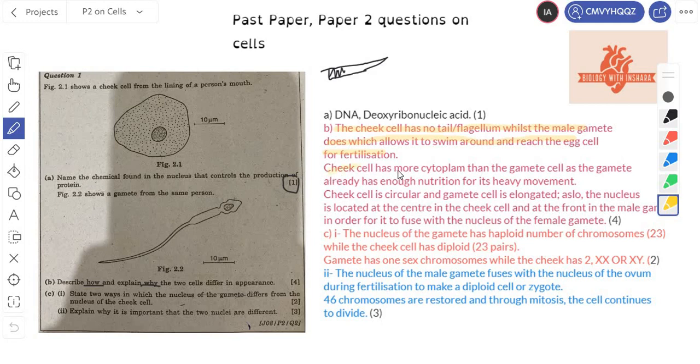Now this comes under inheritance and genetics and I'll be making videos on this as well very soon because I had a request from someone to make a video on inheritance. And yes, I do remember your request and those videos will be uploaded very, very soon. The cheek cell has more cytoplasm. You can tell like this region here, if I shade this, you see this region here, this here is your cytoplasm. And this here, you see here, the cytoplasm should be somewhere here. Generally the cheek cell has more cytoplasm. That's one also observance that you should actually be able to pick out when you look at this. It has more cytoplasm than the gamete as the gamete already has enough nutrition for its heavy movement.